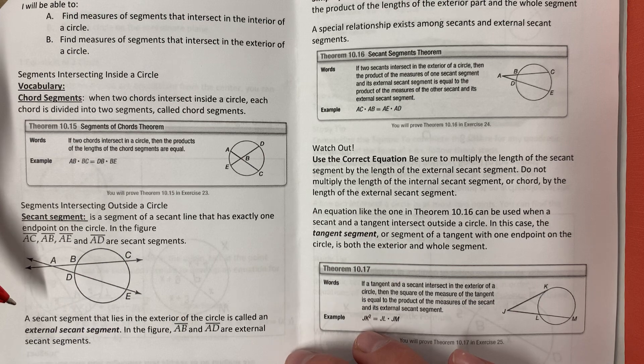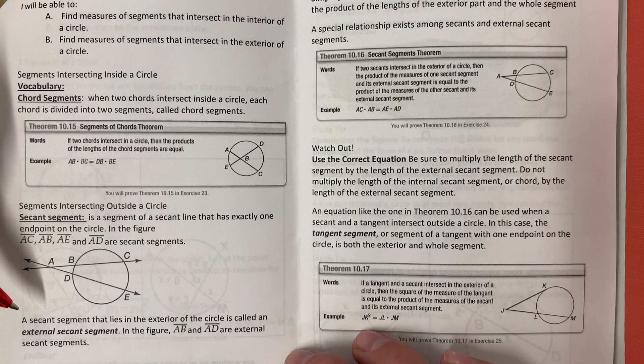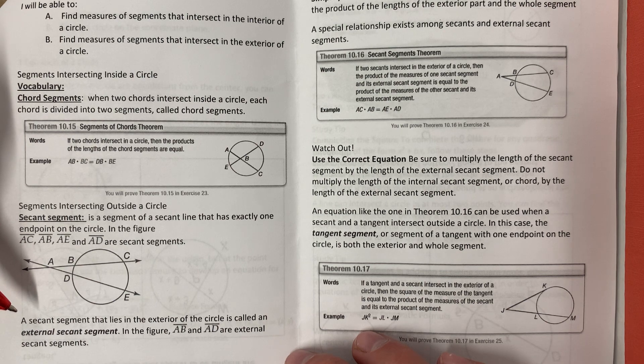A secant segment that lies in the exterior of a circle is called an external secant segment. In the figure, AB and AD are external secant segments.